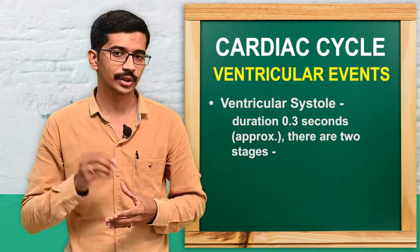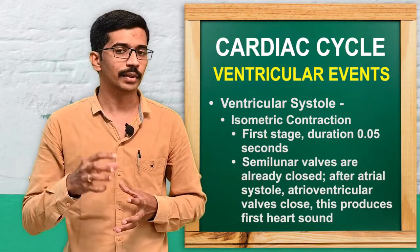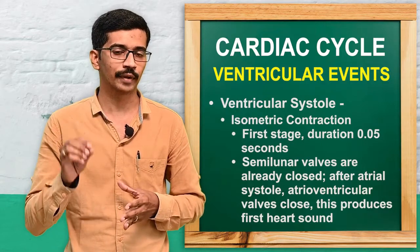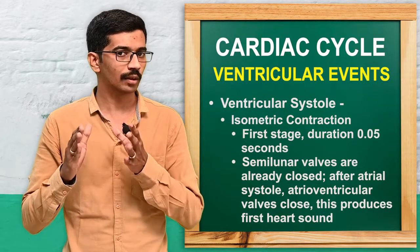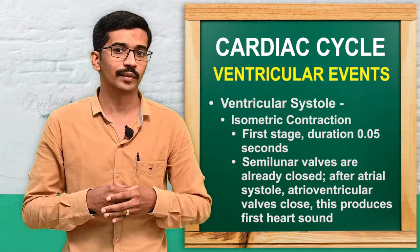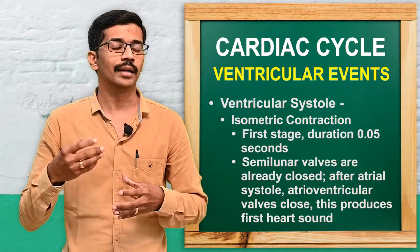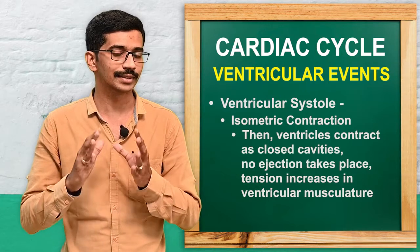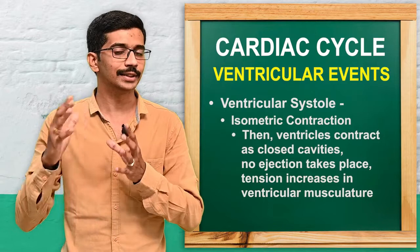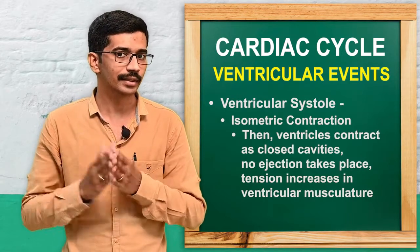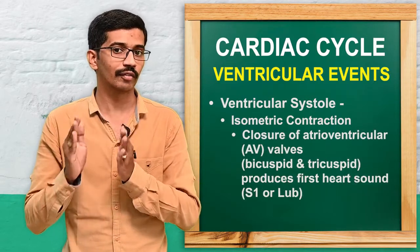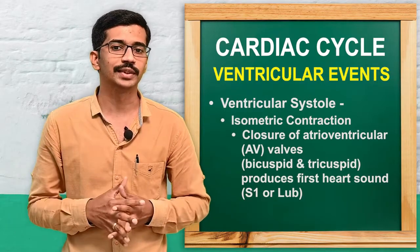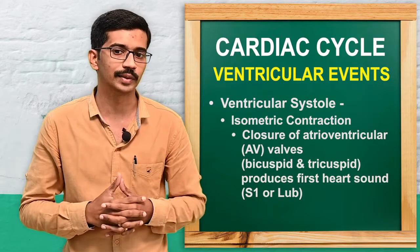The first stage in ventricular systole is isometric contraction, and this period is approximately 0.05 seconds. During this stage, the semilunar valves are already closed, and the atrioventricular valve will also be closed, which produces the first heart sound. The ventricle acts as a closed cavity — contraction occurs but there is no ejection. Only the tension in the ventricular musculature increases. The AV valves — the bicuspid valve and tricuspid valve — close and produce the first heart sound, S1, also called the 'lub' sound.